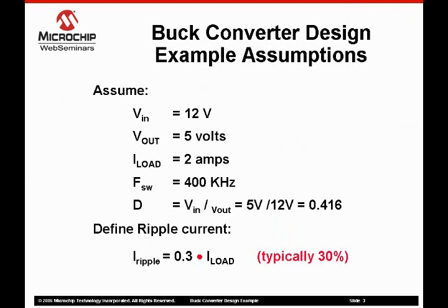This example converts a 12-volt power source to an output of 5 volts with a 2-amp load. The switching frequency is selected at 400 kHz. The current ripple will be limited to 30% of maximum load.